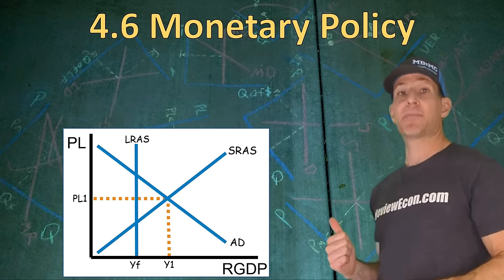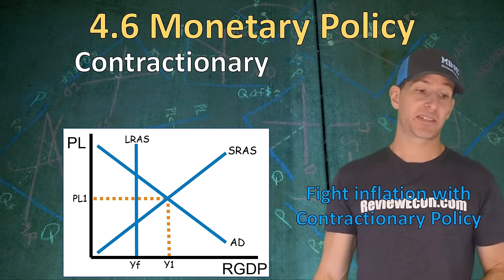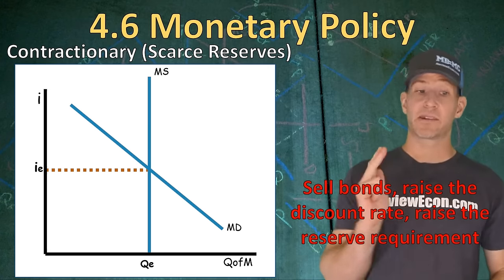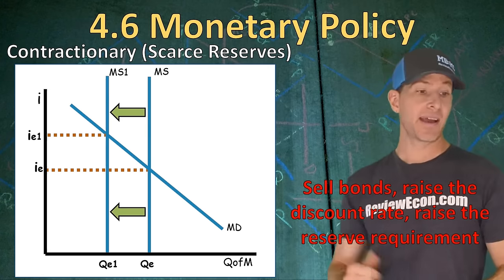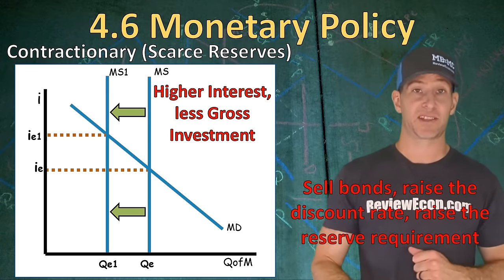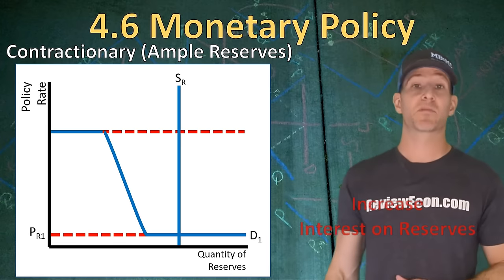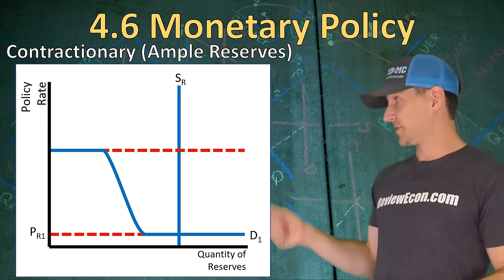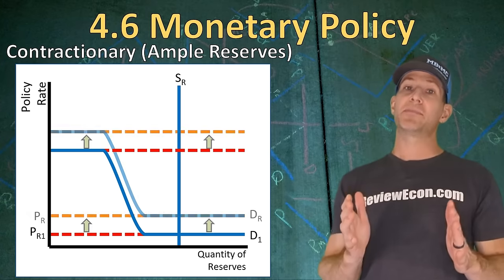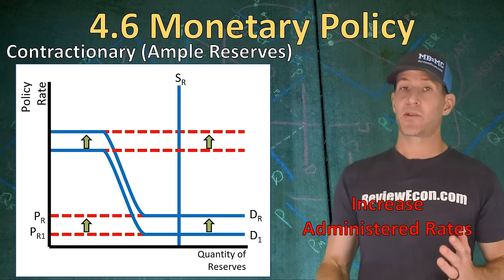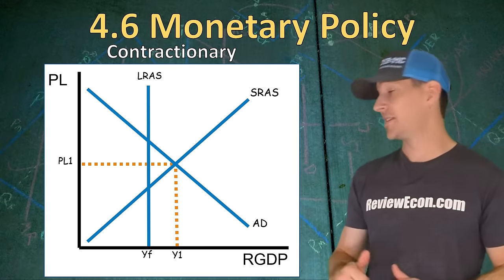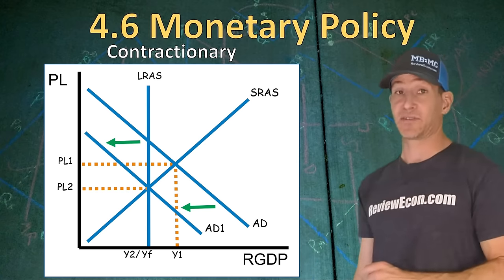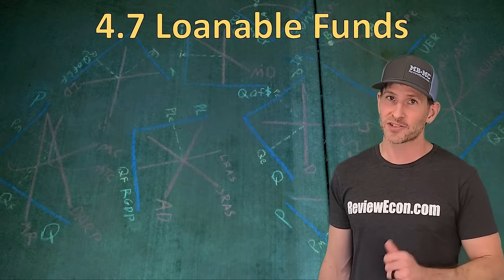If we have an inflationary gap, central banks use contractionary monetary policy to fight inflation. In a scarce reserve system, they sell bonds, raise the discount rate, and raise the reserve requirement to decrease the money supply, leading to higher interest rates and less gross investment. In an ample reserve system, they increase interest on reserves, which increases the federal funds rate or policy rate. They could also increase the discount rate, or both together — increasing administered rates. Either way, higher interest rates mean less gross investment, shifting aggregate demand to the left, restoring long-run equilibrium, and resulting in a lower price level — successfully fighting inflation.